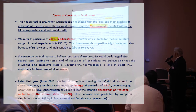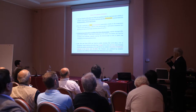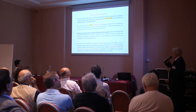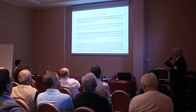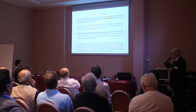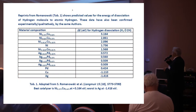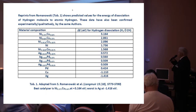Another key point: Constantan has an extremely large value for the dissociation of hydrogen from molecular to atomic state. To get any reaction, you need atomic hydrogen or deuterium. Constantan is the best for this. We found this in a paper published several months before our guess — when we saw that paper, we realized we were lucky.